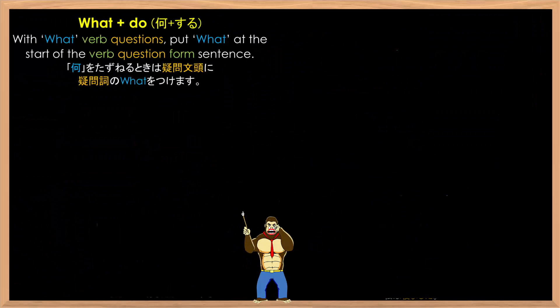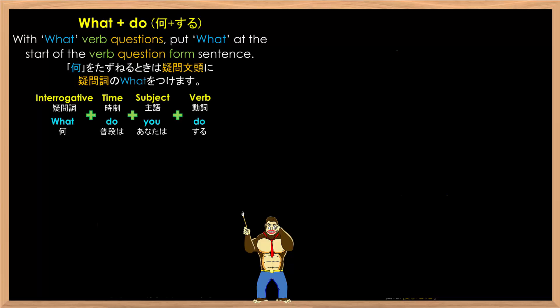With 'what' verb questions, put 'what' at the start of the verb question form sentence. As in, 'What do you do.' As you can see, 'do you do' is the normal question form and you just add 'what' to the start. This is for the present tense.